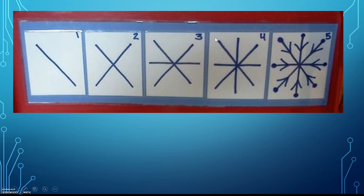In step four, you have the X with the horizontal line, and then a vertical line that goes straight up and down, so it's an X with a T on top. Step five, you can put little designs at the ends to make your snowflake.